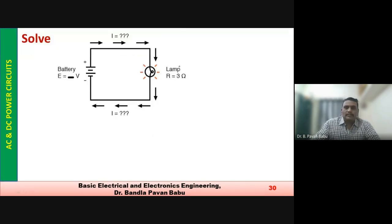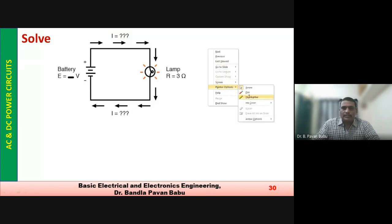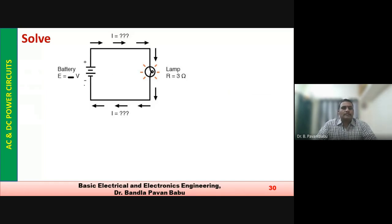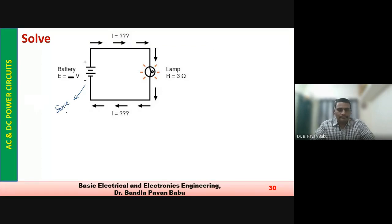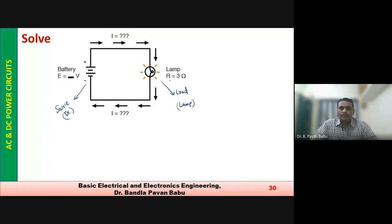Let us solve a simple problem. This is a simple circuit with a DC source. The load is a lamp, considering only resistance: R = 3 ohms, and supply voltage = 10 volts. The circuit is closed and we need to determine the current direction — current always flows from lower potential to higher potential.